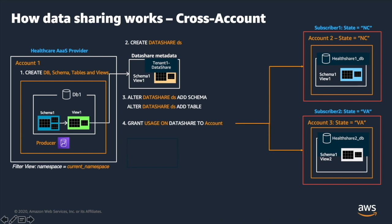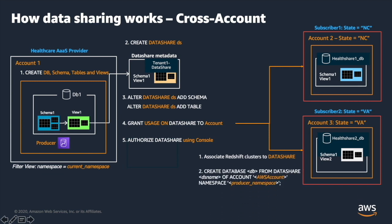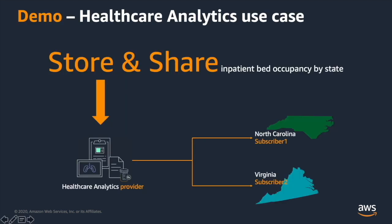Then grant usage on the data share to the consumer's AWS account. On the consumer side, the admin can associate the Redshift clusters to the data share. Then create the local database pointing to the data share, and start querying the data using a three-part notation, which is database, schema, and table name. Now let us see how the healthcare analytics provider can store and share data with subscribers using Amazon Redshift cross-account data sharing.